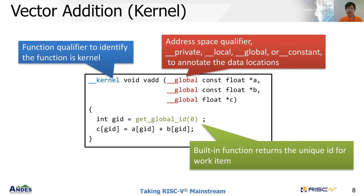This is the kernel program for vector addition. We can see the frequently used C extensions for OpenCL. The function qualifier is used to identify that the function is a kernel, and the address space qualifiers — private, local, global, or constant — are used to annotate the data locations. The get_global_id() built-in function returns the unique ID for a work-item. In OpenCL, this ID is usually used as an array index to load and store data, so each work-item can run the same kernel program with a different data set.